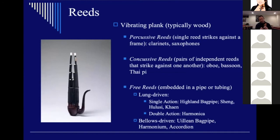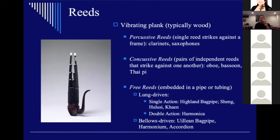This is a Chinese hulusi — a lung-driven free reed. It's a single-action free reed, meaning if it were working correctly you could inhale and exhale through it and the sound would not change. The highland bagpipe and the Chinese sheng work on the same principle. The harmonica, however, is a double-action free reed — as you exhale and inhale, two sets of reeds pivot, creating two different pitches, which separates it from other free reeds.